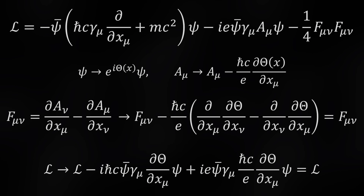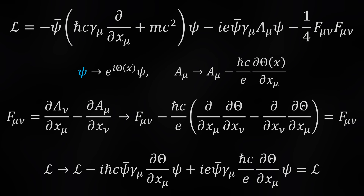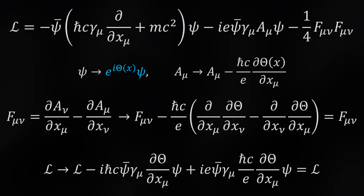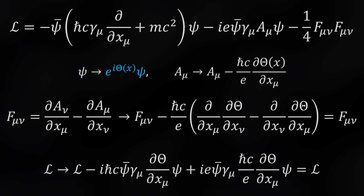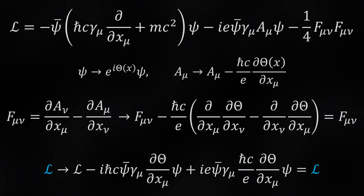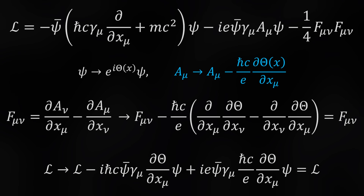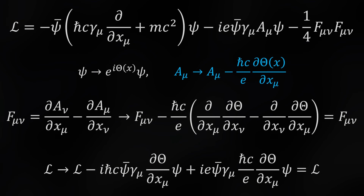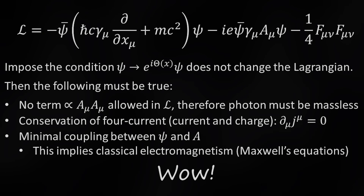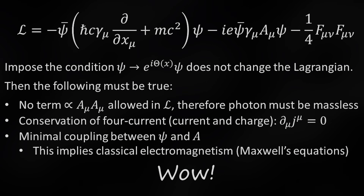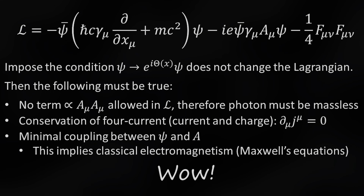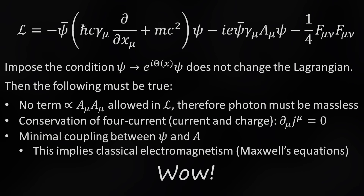The four-potential is like relativistic voltage, and its inherent symmetry relates to how derivatives map onto electric and magnetic fields. There are really deep and profound ideas connecting complex numbers and quantum mechanics, and this video has only scratched the surface. Hopefully it's given you at least some intuition for the complex numbers.